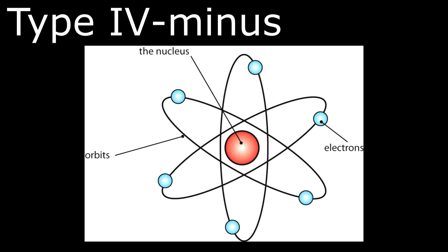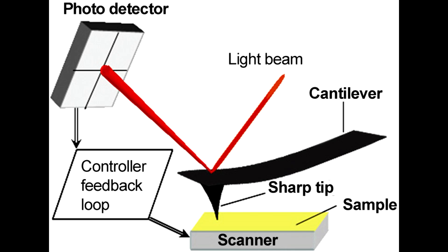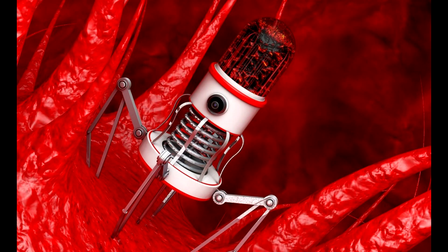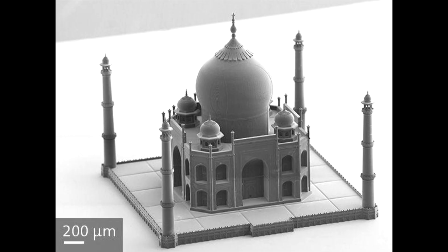A Type 4-minus civilization is capable of manipulating individual atoms — creating nanotechnologies on an atomic scale and essentially creating complex forms of artificial life. We see the origins of this in the invention of the scanning tunneling microscope and the atomic force microscope in the late 1980s. Current technologies include nanomaterials, nanosensors, semiconductors, and biotechnology, with the future involving nanorobotics and 3D nanoprinting. This is around the area where current humans are.